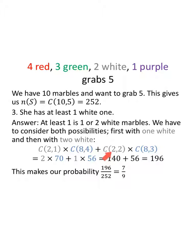Add to that the combinations of two things taken two at a time, which is one. So multiply, the combinations of eight marbles taken three at a time is 56. Once again, please check my arithmetic. Make sure I did that right. Two times 70 is 140. One times 56 is 56. 140 plus 56 is 196. Out of our total of 252, which makes seven ninths. Seven ninths of the time, we'll have one or two marbles.